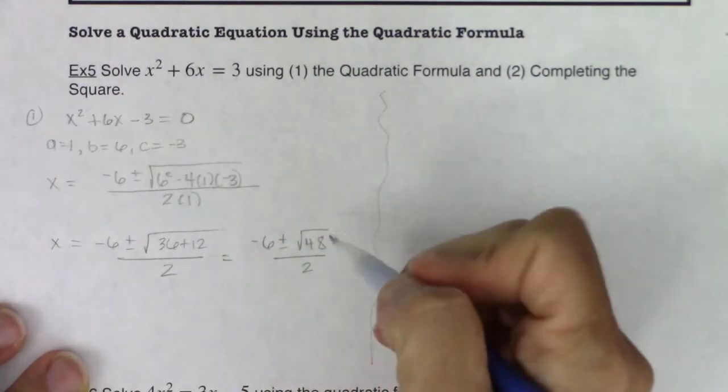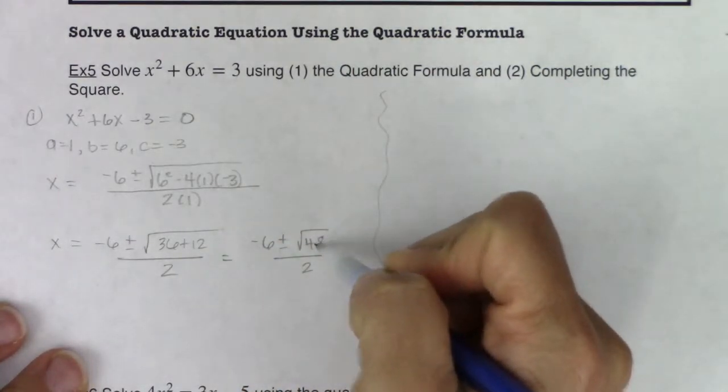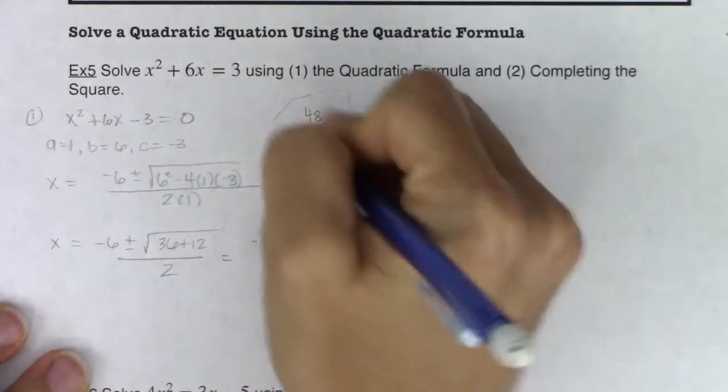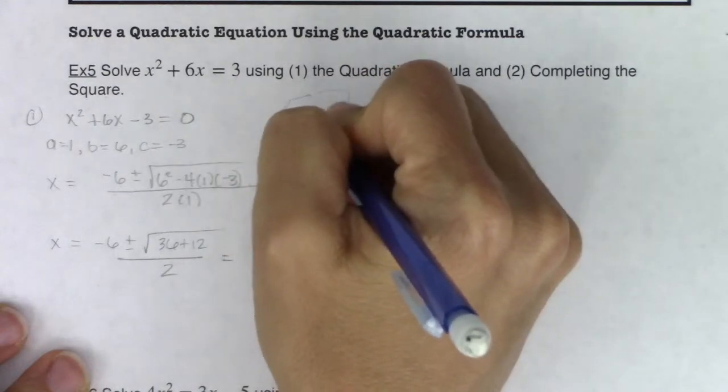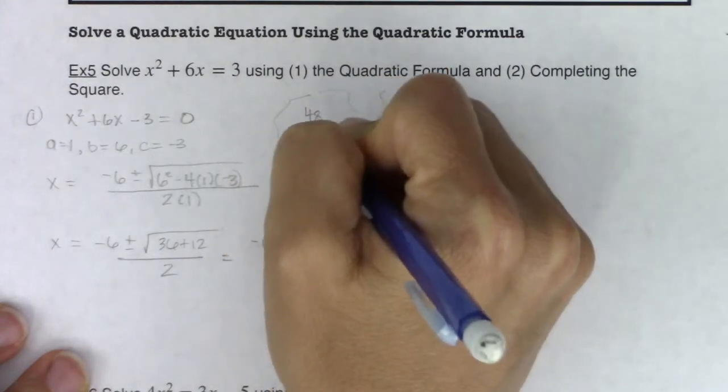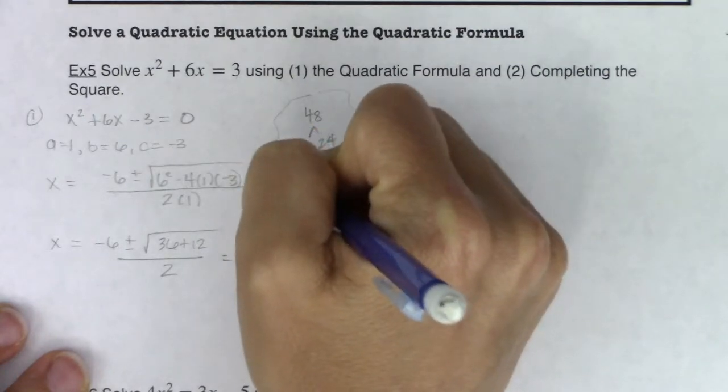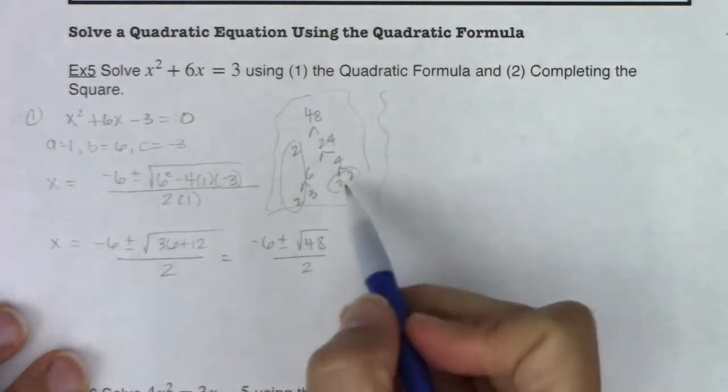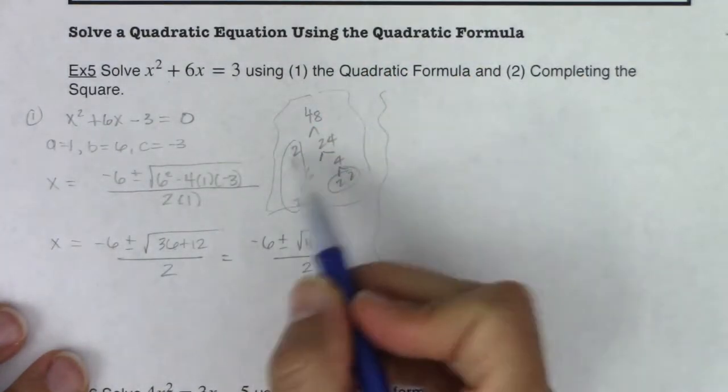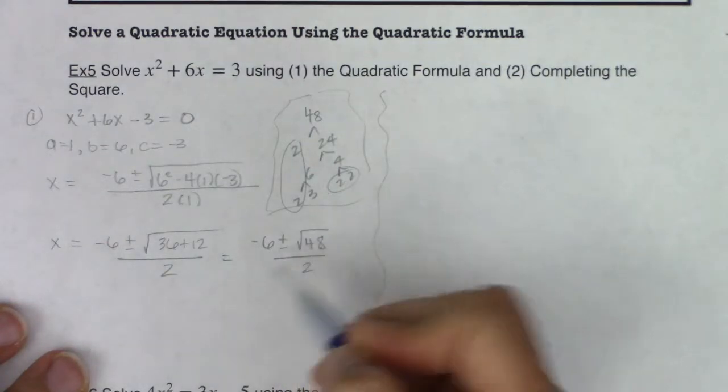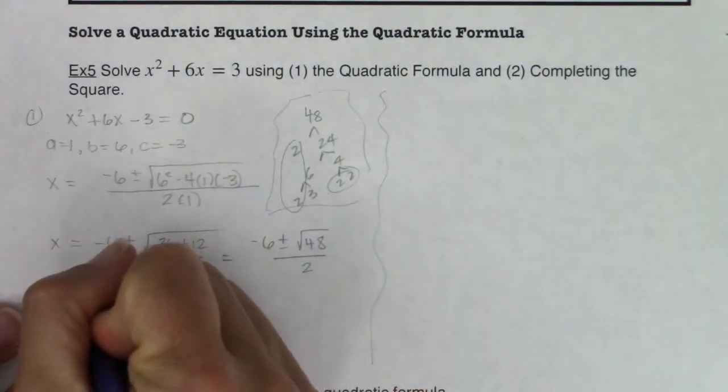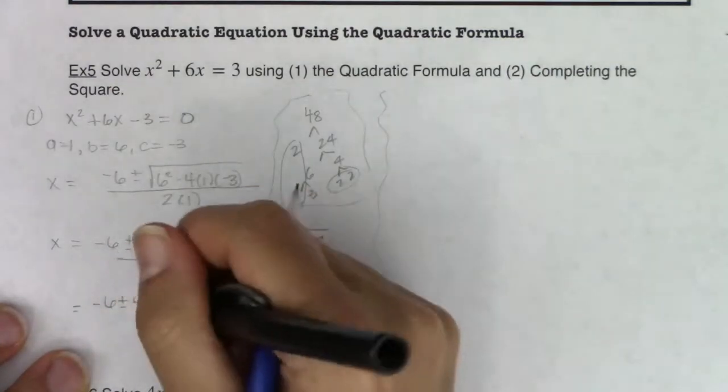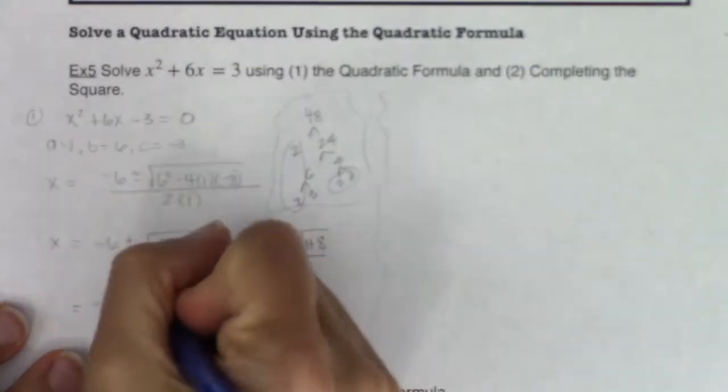Now inside 48, what lives inside 48? Let me break it down since I'm not sure. So 48 I can think of as 2 and 24, this is 6 and 4, this is 2 and 2, and then 2 and 3. So I see a pair of 2s here, a pair of 2s here, and a 3 left over. So really I have 2 times 2 times 2 times 2, it looks like I have 16, so this is 16 times 3. That's going to come out as 4 root 3. So I've got negative 6 plus or minus 4 root 3 all over 2.